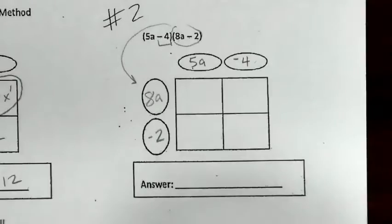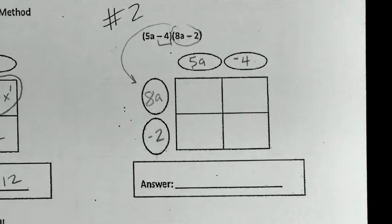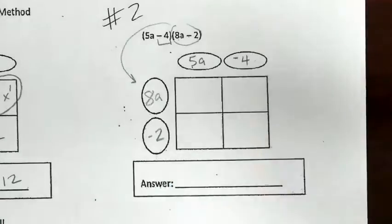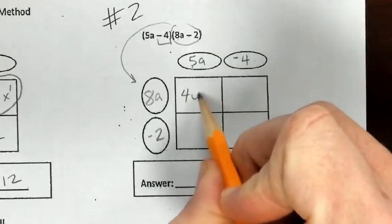Once again, we're going to multiply to get inside the box. I'm going to multiply number times number and then look at how many variables I have. Looking at the number times the number, I've got 5 and I'm multiplying by 8. I get 40 as the coefficient.